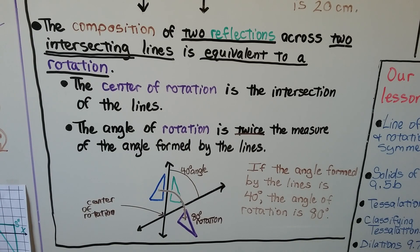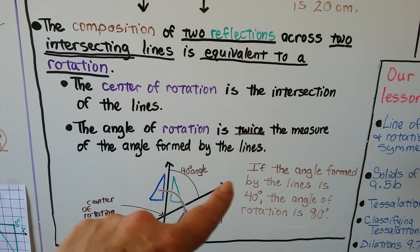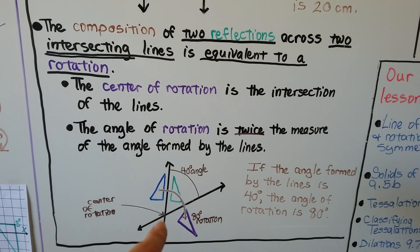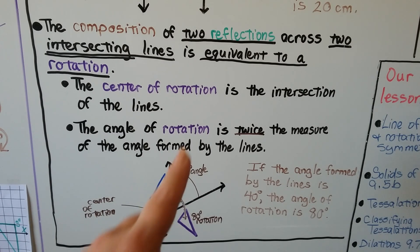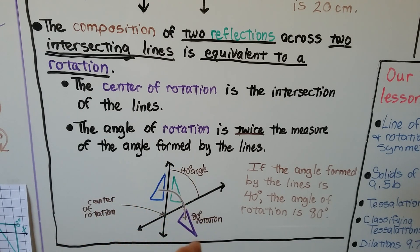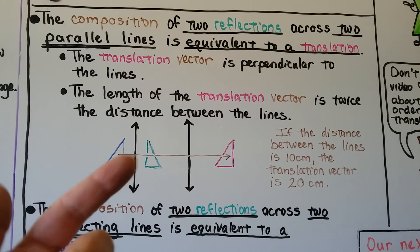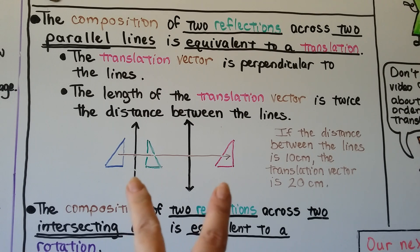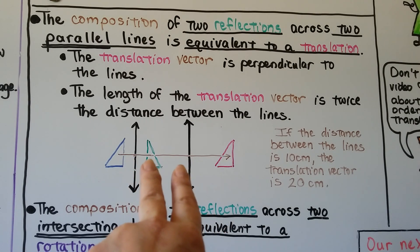The next part of Theorem 9.4.2 says the composition of two reflections across two intersecting lines is equivalent to a rotation. The center of rotation is the intersection of the lines. The angle of rotation is twice the measure of the angle formed by the lines — so if the angle is 40 degrees, the rotation is 80 degrees, twice that angle.